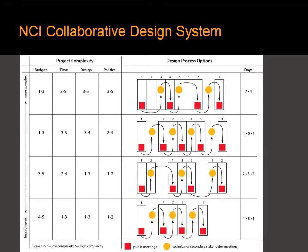By going away, you risk political problems. In the continuous seven-day process, or even the five-day process, you're there to handle unexpected political situations and to develop the plan to a refined degree. For easier projects — for example, just the design of a park where the political will is very strong — you can probably get away with more of a three-day process.